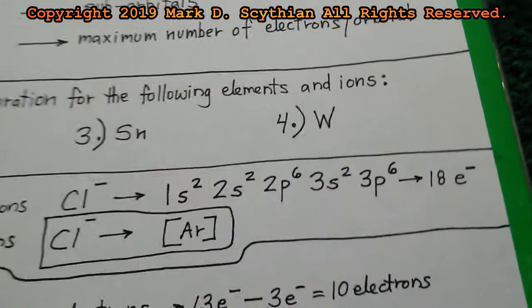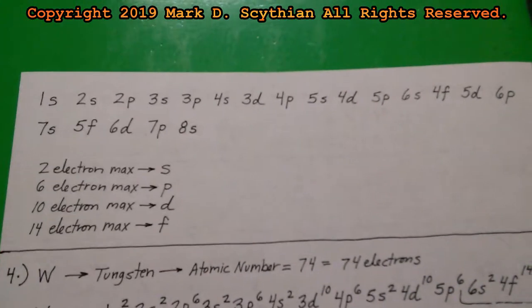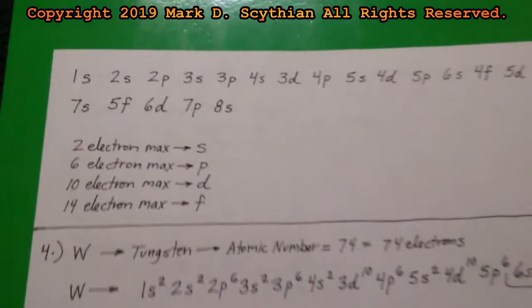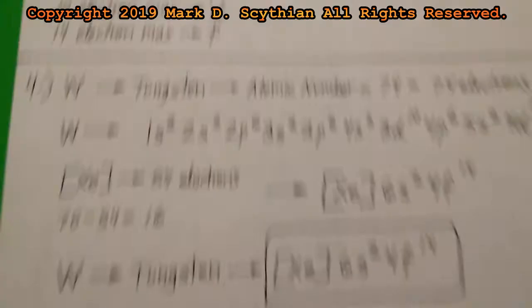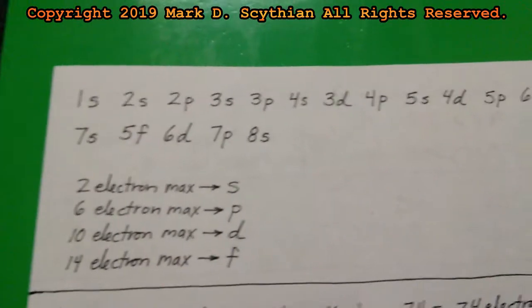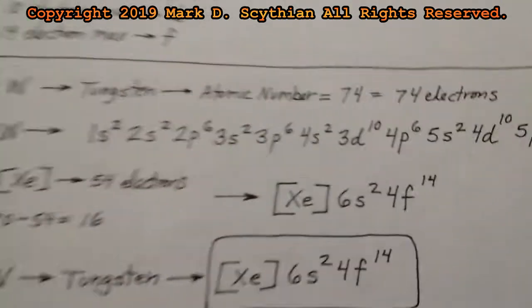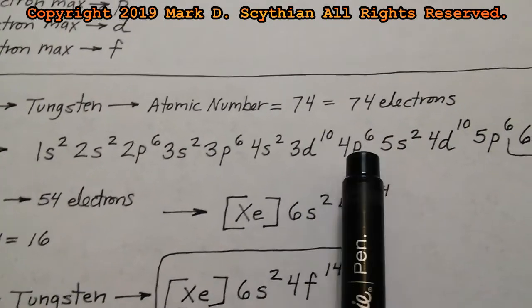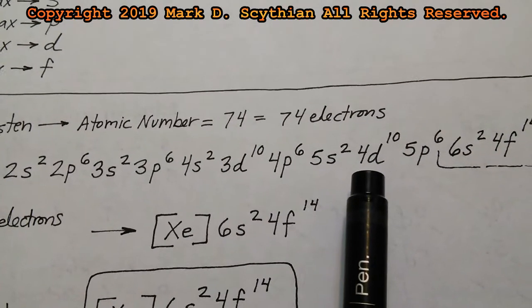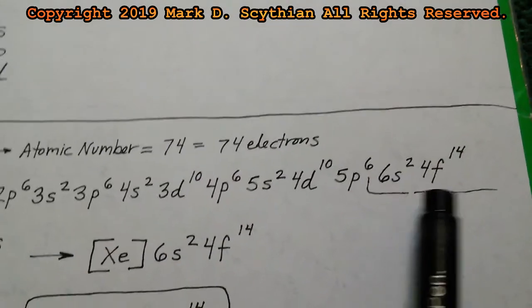Lastly, we have tungsten W, with 74 electrons — not an ion. Using the same routine, write out sequences until we approach 74: 2, 4, 10, 12, 18, 20, 30, 36, 38, 48, then 48 plus 6 is 54, then 56 plus 14 is 74.